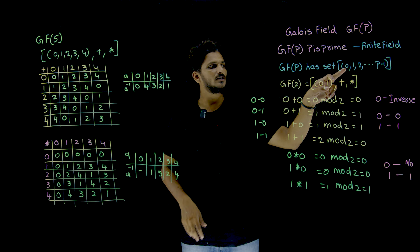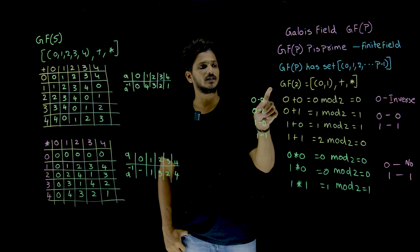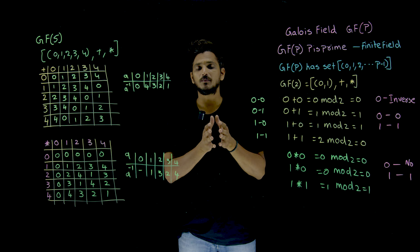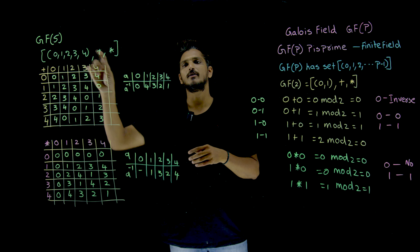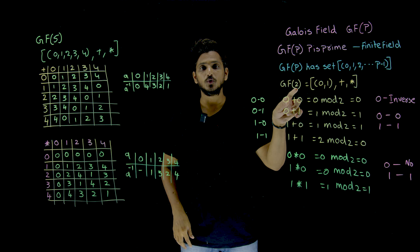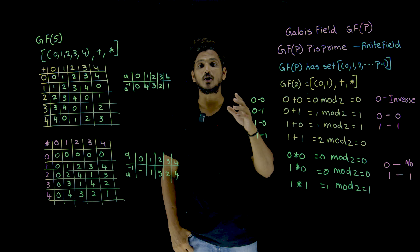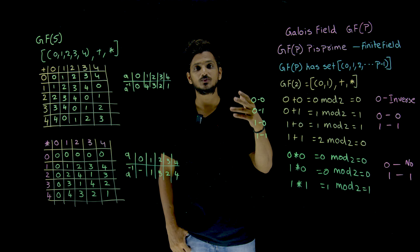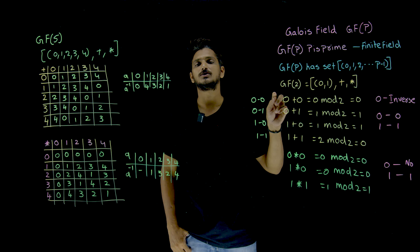On this Galois field operation, suppose if you take the example GF of 2 — 2 is a prime number. Similarly, the next example is GF of 5 — 5 is a prime number. In the field, we have to satisfy two binary operations. The binary operations we consider here are addition and multiplication.